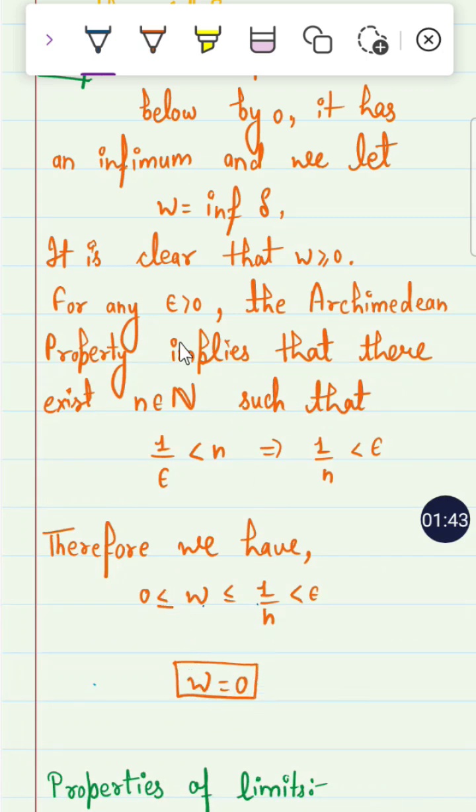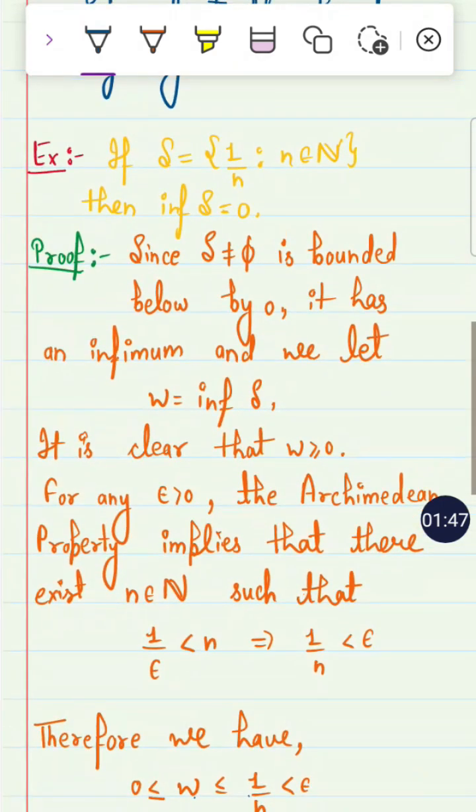If W equals 0, then what we let W is infimum of S. So this proves that infimum of S equals 0. It also shows that the supremum of this set is 1.